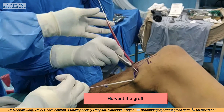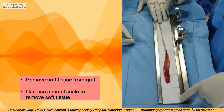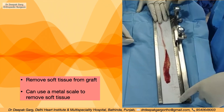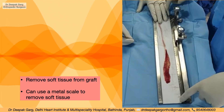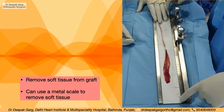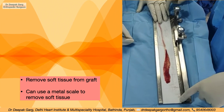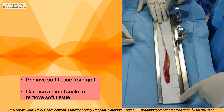Once we take the graft, we prepare it by removing all the soft tissue. We can use a metal scale to remove the soft tissue from the graft.